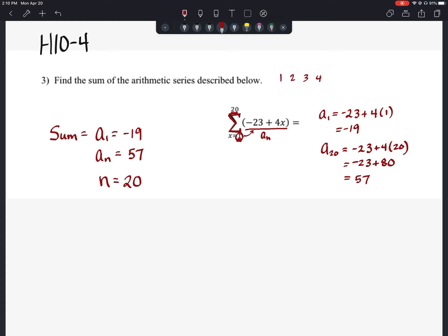So now that we have everything that we need, we can go ahead here and find the sum of this. So the sum of n number of terms is going to equal the first term plus the nth term times half the number of terms. So in this case, since n is 20, we'll say the sum of the 20 terms in the series is going to equal negative 19 plus 57 times 20 divided by 2.